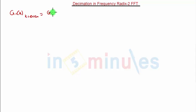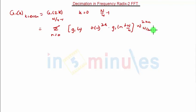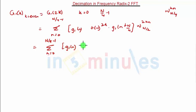g1 of k when k is equal to even, that is g1 of 2k, for k ranging from 0 to N/4 minus 1. Substituting these values, summation n equals 0 to N/4 minus 1: g1(n) plus (-1)^(2k) times g1(n + N/4) times W raised to 2kn over N/2. Since (-1)^(2k) is always 1 and W^(2kn/(N/2)) simplifies to W^(kn/(N/4)), we get summation n equals 0 to N/4 minus 1 of [g1(n) + g1(n + N/4)] times W^(kn/(N/4)).